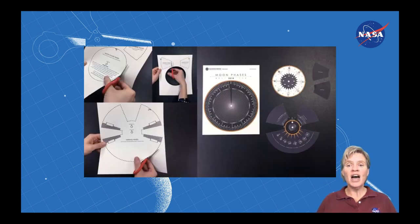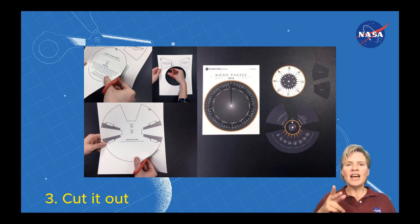Next, you're going to cut out a few things. Follow the little scissors icons and cut out the items shown.